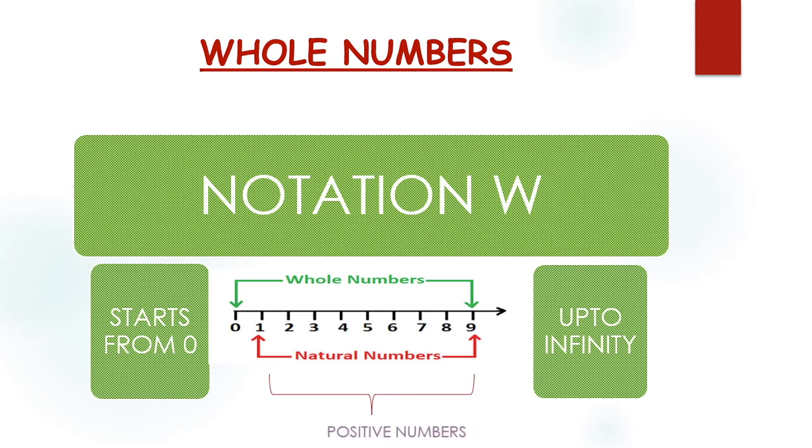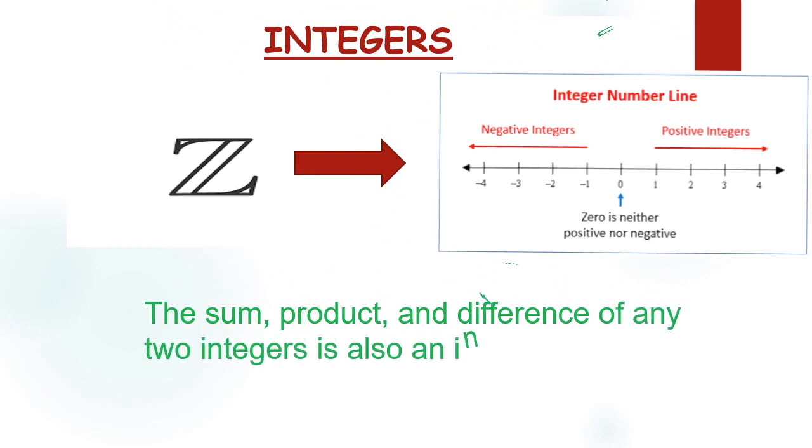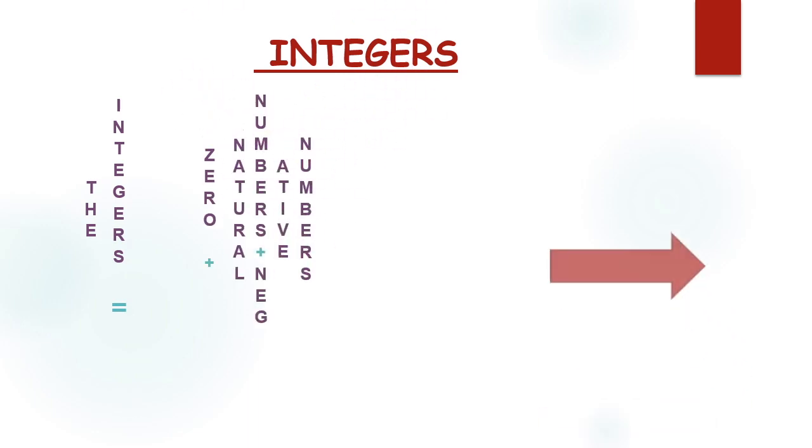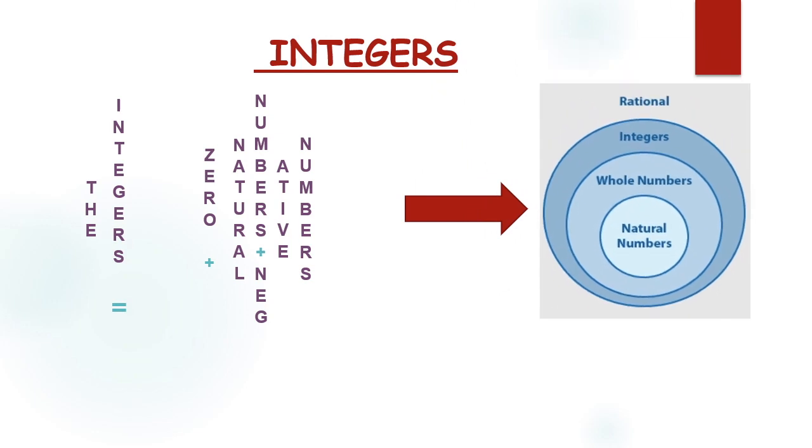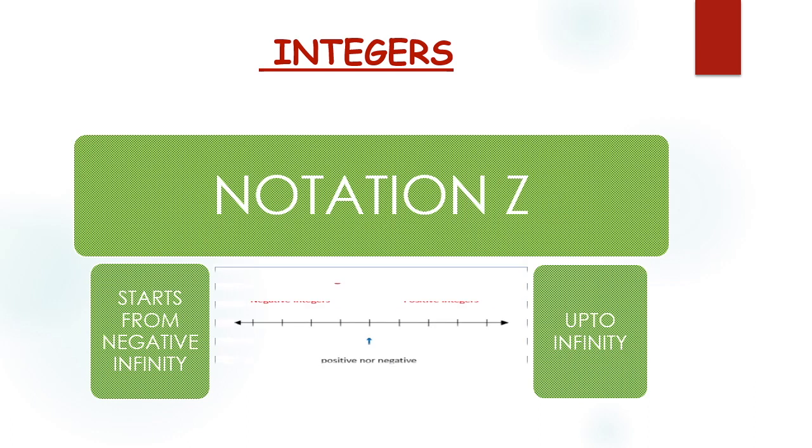The integers. The word integer originated from the Latin word integer which means whole. There are an infinite number of integers. They can be ordered by being placed on a number line. It is a special set of whole numbers comprised of zero, positive numbers, and negative numbers. The integers are represented by the letter Z. Examples of integers: 1, 6, 15.